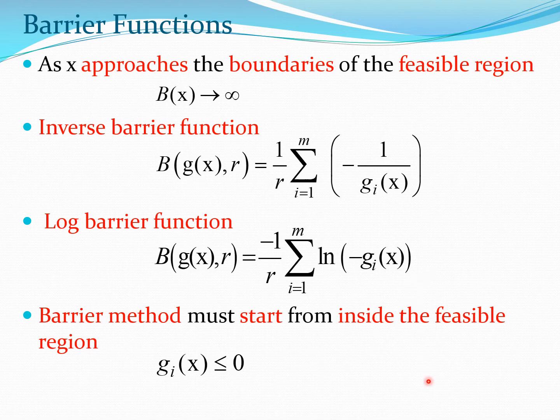One more important aspect of the barrier method is that it starts from inside the feasible region and remains inside the feasible region, because the barrier will not let the solution get out. So whenever you are dealing with the barrier method, g(x) is less than 0.